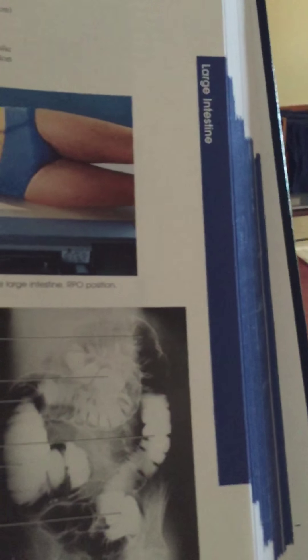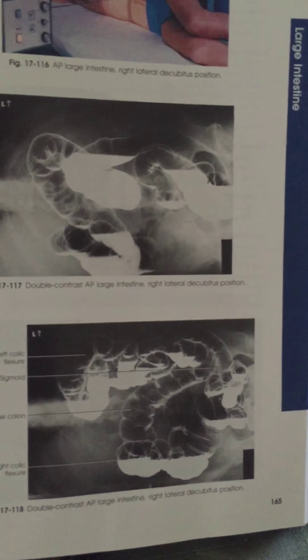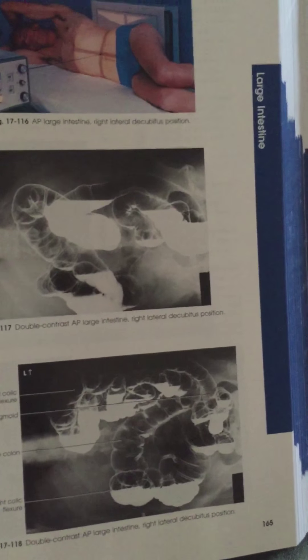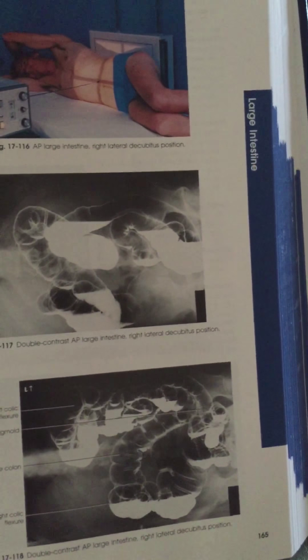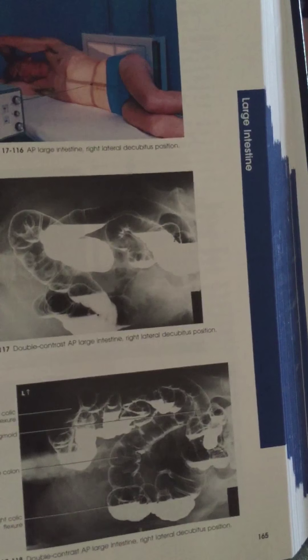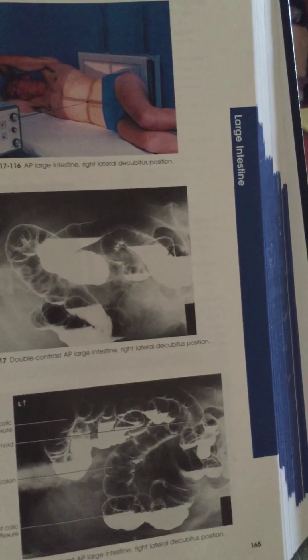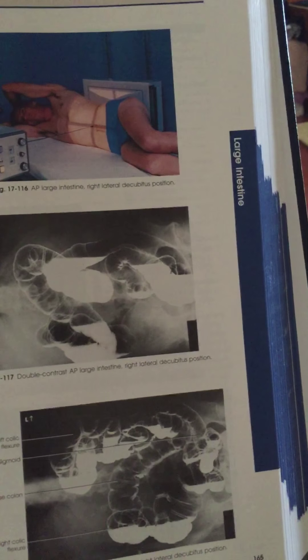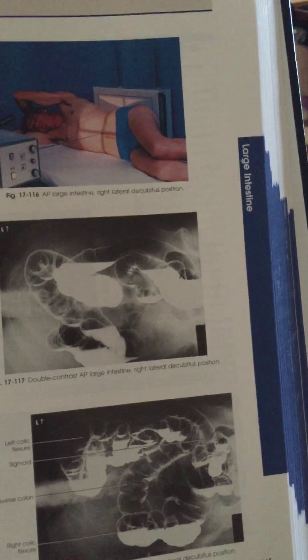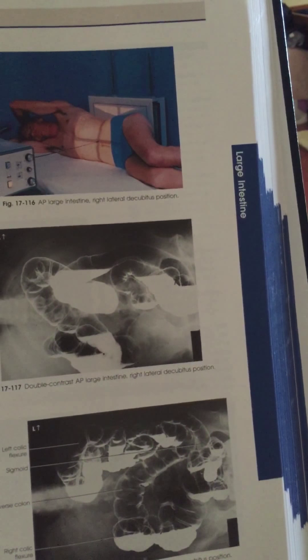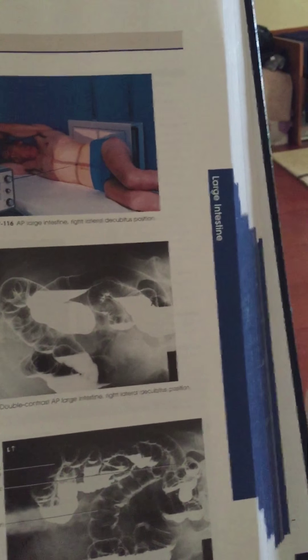After the left lateral we moved on to the decubitus position, starting with the right lateral decubitus. You want evidence of proper collimation, with the area from the left colic flexure to the rectum included, and no rotation of the patient as demonstrated by symmetry of the ribs and pelvis. For single contrast examinations, adequate penetration of the barium is required. For double contrast examinations, the air-inflated portion of the colon is of primary importance and should not be over-penetrated.